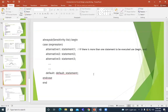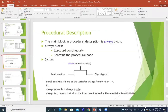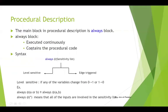We are going to go to the slides to talk about the procedural description. In procedural description, the main block we use is called the always block. The always block is the same as the assign statement — it is constant and runs continuously. You will always use the always block in procedural code.